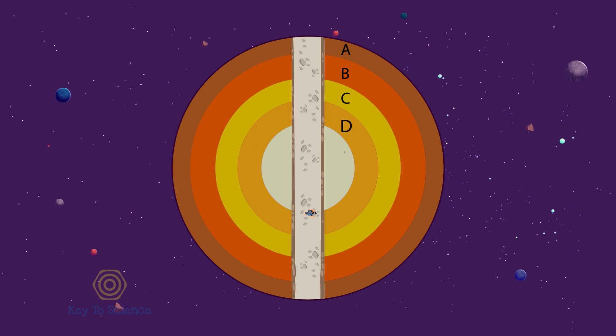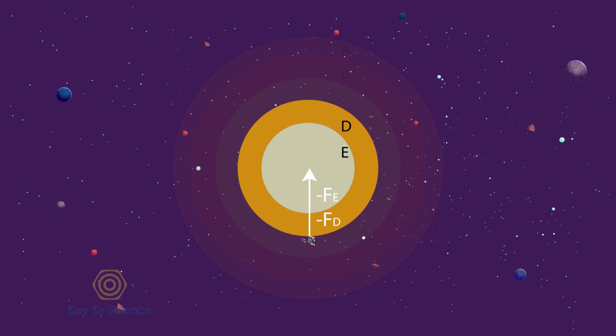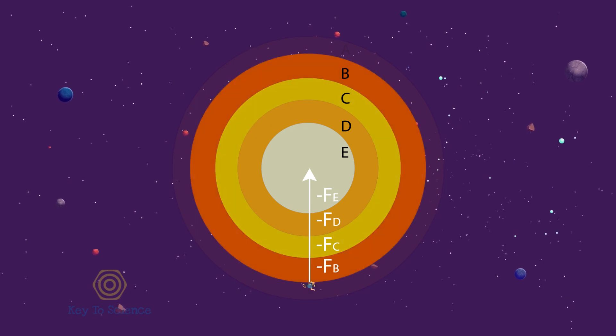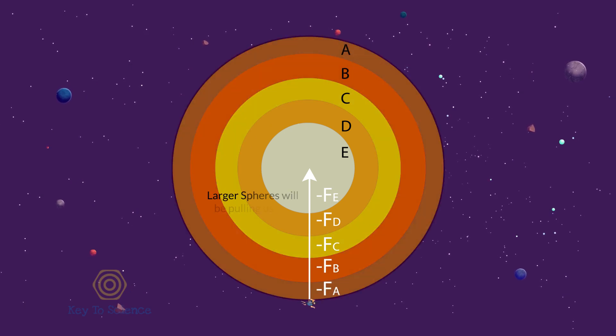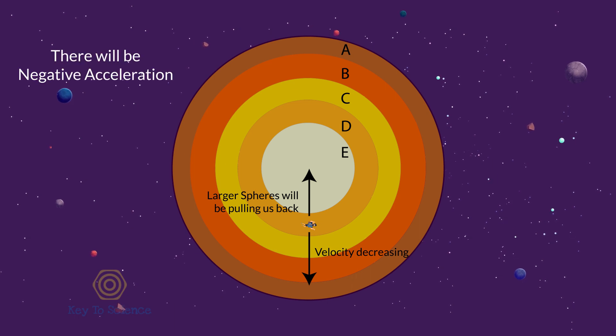What's next? At the very moment we'll pass the center, the corresponding spheres will be pulling us from behind. Gradually, larger spheres will be pulling us back. This way, we will be slowed down by the attraction, hence there will be negative acceleration.